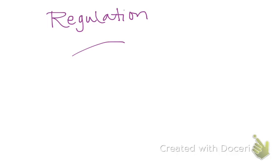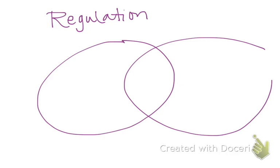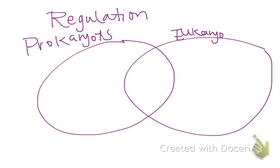Before you put your notes away, make a Venn diagram of regulation in prokaryotes versus eukaryotes. The left circle is prokaryotes, the right is eukaryotes, and the middle is both. For example, transposons — jumping genes — would go in the middle. Take your time, make it detailed, use your notes, and let me know if you have any questions.